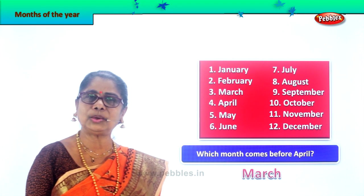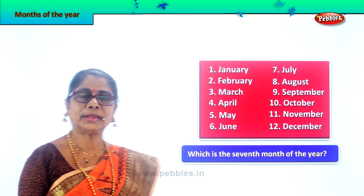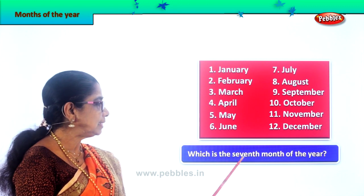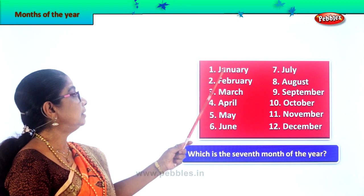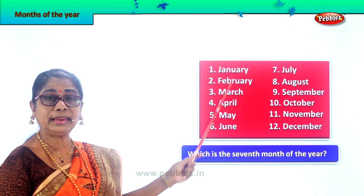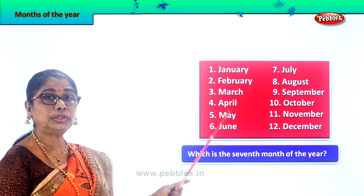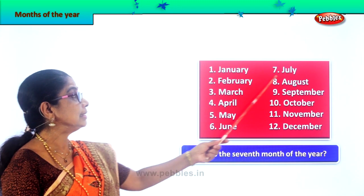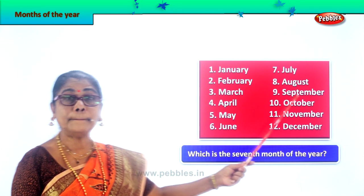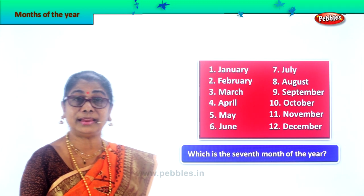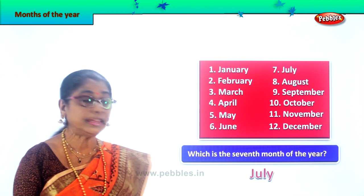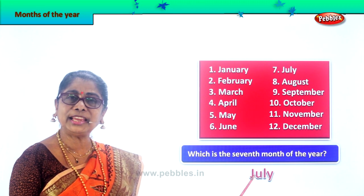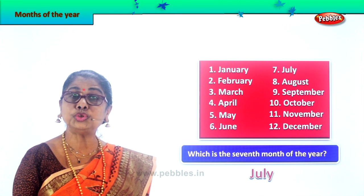Shall we take another question? Which is the seventh month of the year? First is January — second, third, fourth, fifth, sixth. The seventh month of the year is July. July is the seventh month of a year. Spell July — J-U-L-Y, July.